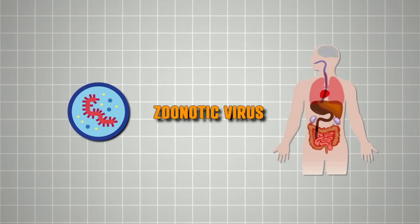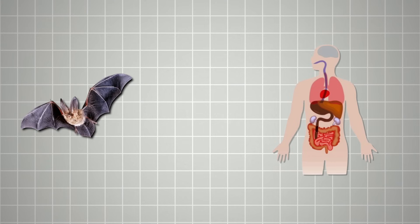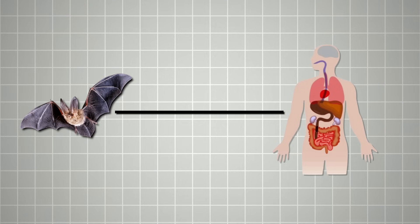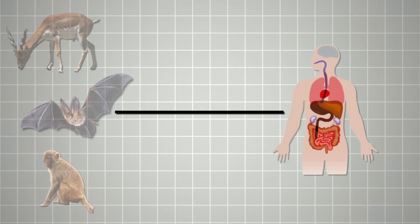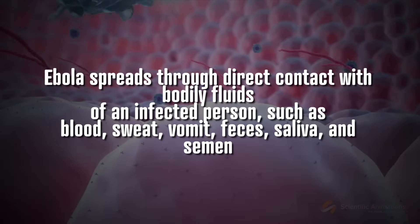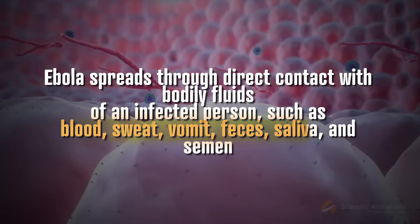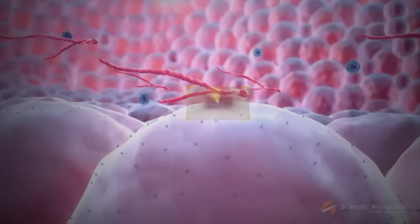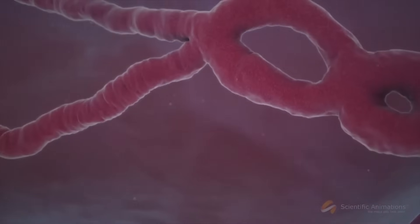Ebola is a zoonotic virus, meaning it can jump from animals to humans. The primary reservoirs are believed to be fruit bats, and humans typically become infected through contact with infected animals such as bats, non-human primates, and antelopes. But what makes Ebola particularly dangerous is how it spreads between humans — through direct contact with bodily fluids of an infected person, such as blood, sweat, vomit, faeces, saliva, and semen. Healthcare workers and family members are particularly at risk, especially in areas where inadequate infection control measures are present.